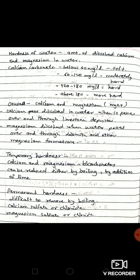There are two types of hardness: temporary hardness and permanent hardness. Let's see what is temporary hardness. Bicarbonates of calcium and magnesium will give temporary hardness. This temporary hardness can be reduced either by boiling or by addition of lime method.